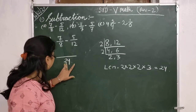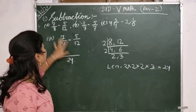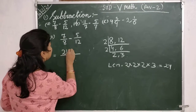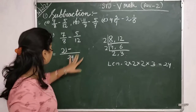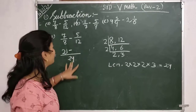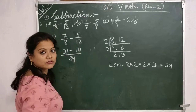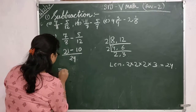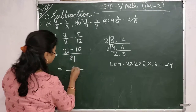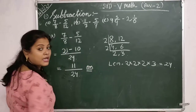So I will write here 24. Then I will divide 24 by 8: 8 times 3 is 24, then multiply by 7, giving 21. So I write 21 minus. Again I divide 24 by 12: 12 times 2 is 24, then 2 multiply by 5 gives 10. So I write 10. Your answer will be 21 minus 10 is 11, so your answer is 11 by 24.